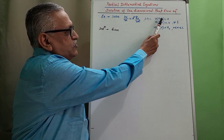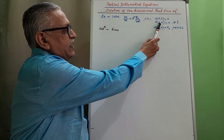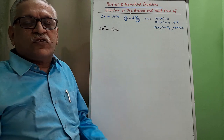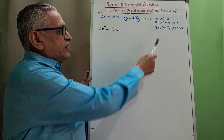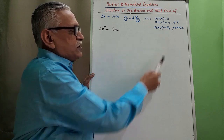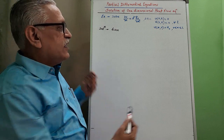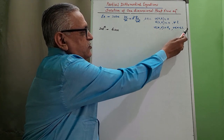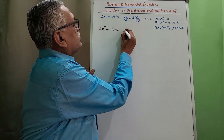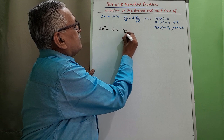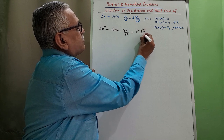The boundary conditions are u(0, t) = 0 and u(l, t) = 0 for all values of t. The initial condition is u(x, 0) = u₀, where u₀ is the uniform temperature, for 0 ≤ x ≤ l. This given differential equation ∂u/∂t = a² · ∂²u/∂x² is the one-dimensional heat flow equation.